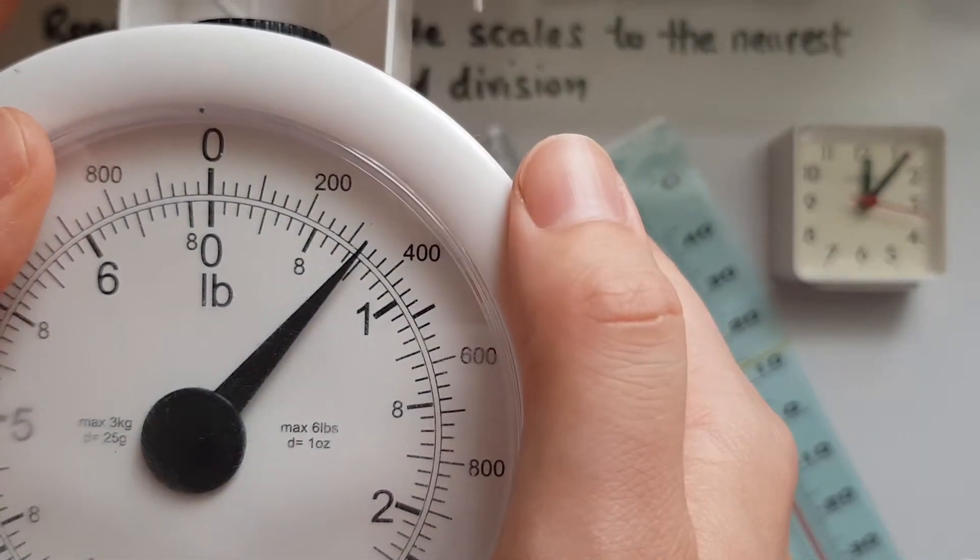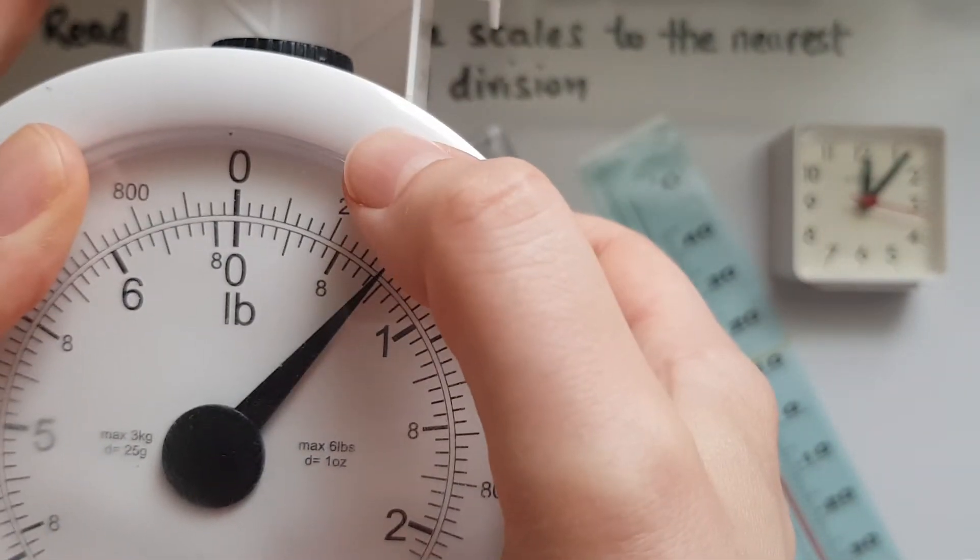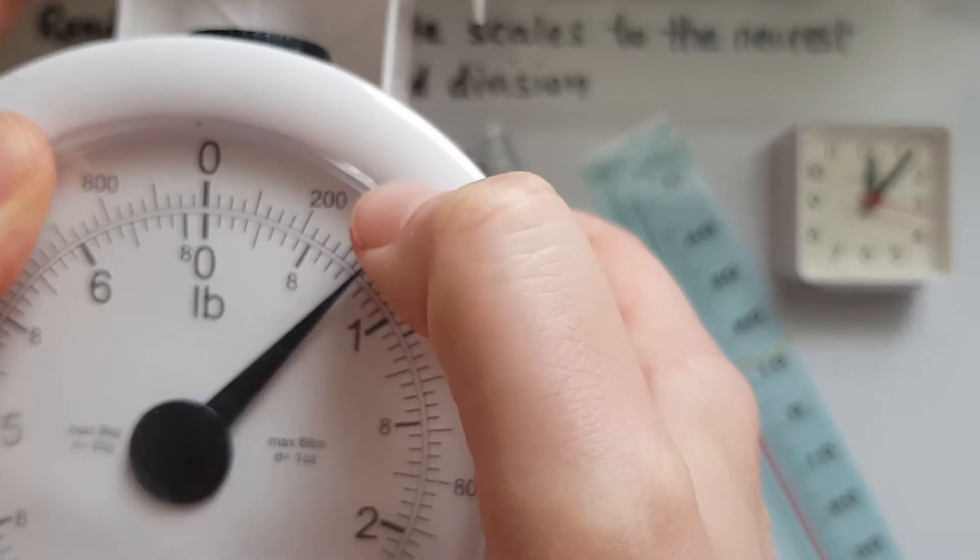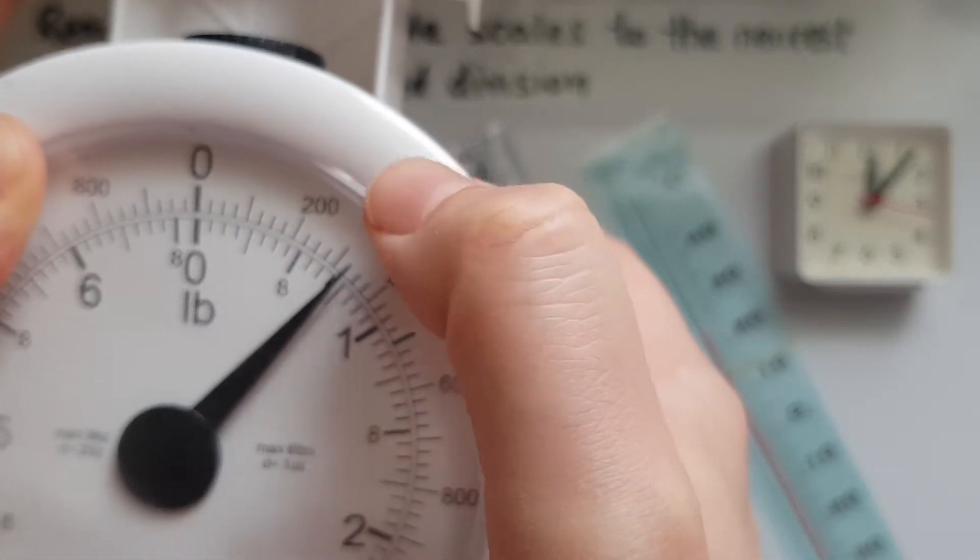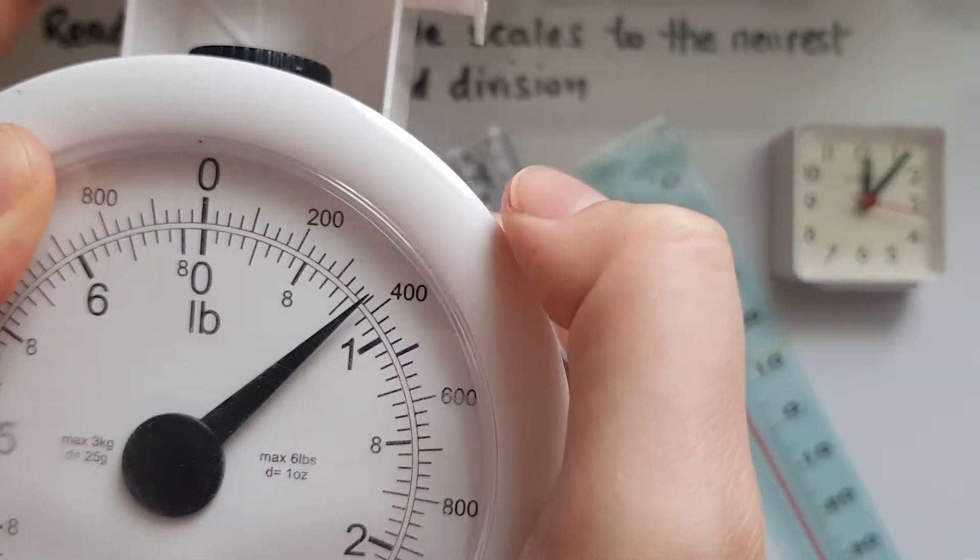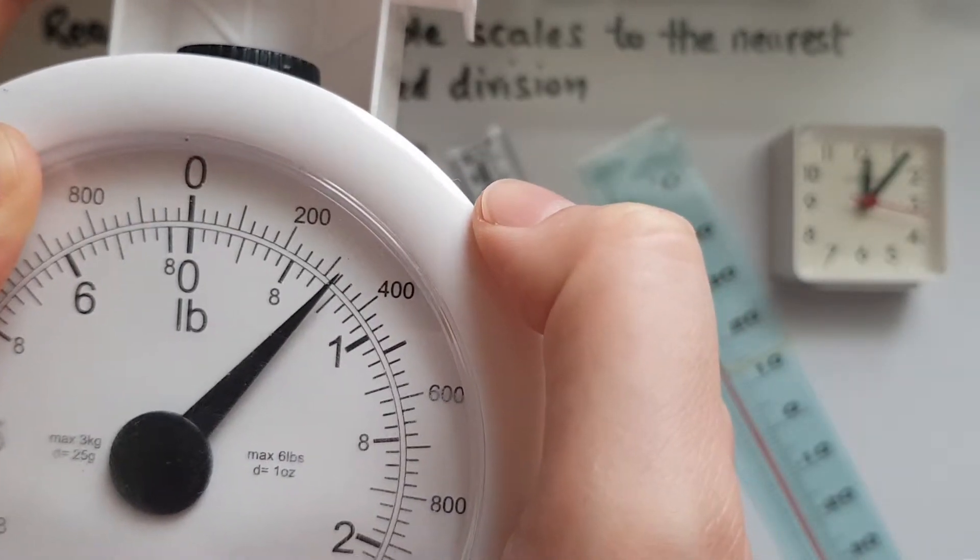How about this? So we've got 200 already and 100 over there, so it makes 300. And the 25, 325 is here.